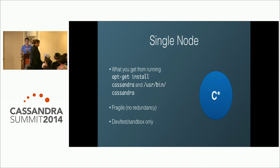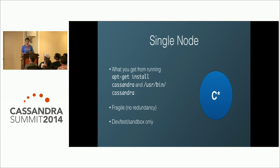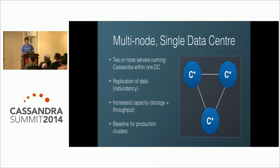Starting with the basics: a single-node cluster is what you get when you do 'apt-get install cassandra' on a machine. This is great for development and sandboxing, but there's no data replication, no redundancy. Don't run your production applications like this.